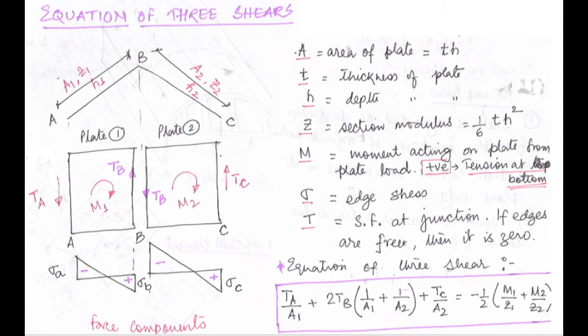Now looking at the next diagram with plate 1 and plate 2, M stands for the moment acting on the plate from the plate load. The sign convention is: if tension is generated at the bottom part, we take it as positive. T stands for the shear force at the junction. If the edges are free — meaning no support at the edges — then the shear force at the edge is 0. TA is the shear force at the left side of plate AB; TC is the shear force at the right side of BC; and TB is at junction B, where shear forces balance each other.